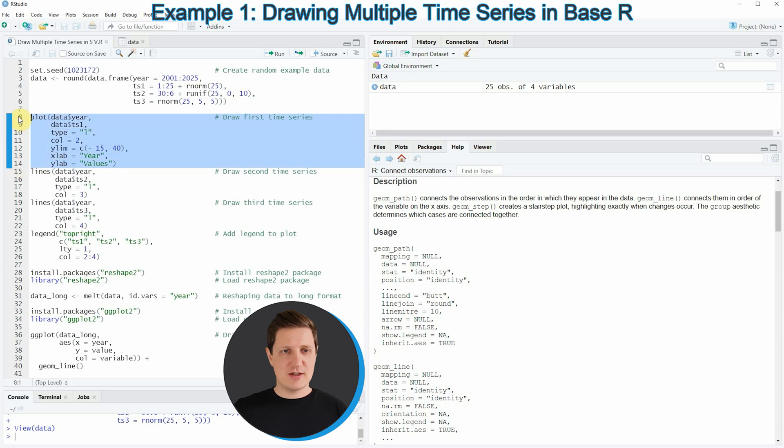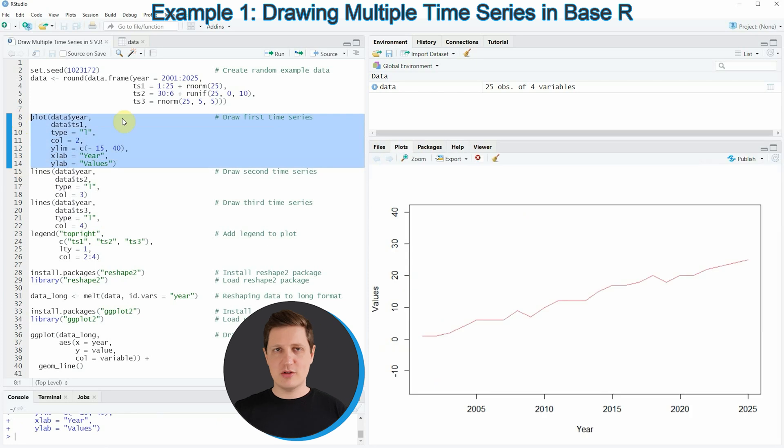So if you run these lines of code you can see that at the bottom right of RStudio a new plot is created which is showing one time series object. To this plot we can now add our other time series objects by using the lines function as you can see in lines 15 and 19 of the code.